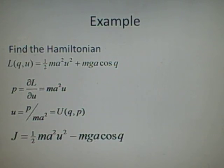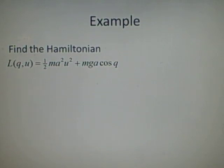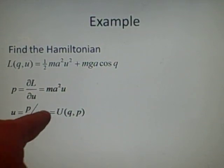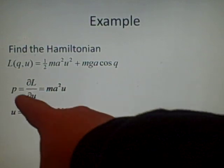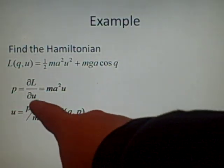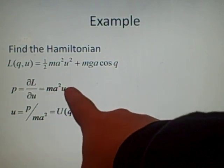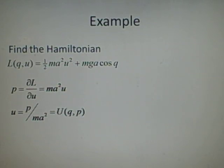So we'll get this eventually: ½ma²u² - mga cos q. Now how I did that was I got our P here and multiplied that... our P, which is ma²u, and we multiply it by this thing here. So ma²u times p over ma². So the ma² cancel, and you'll just get u times p minus the Lagrangian here.